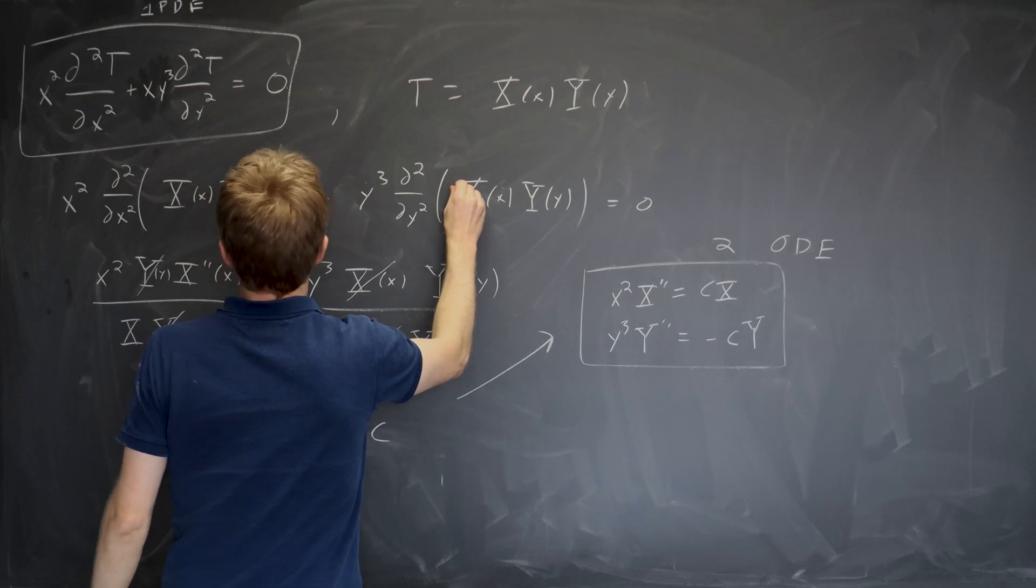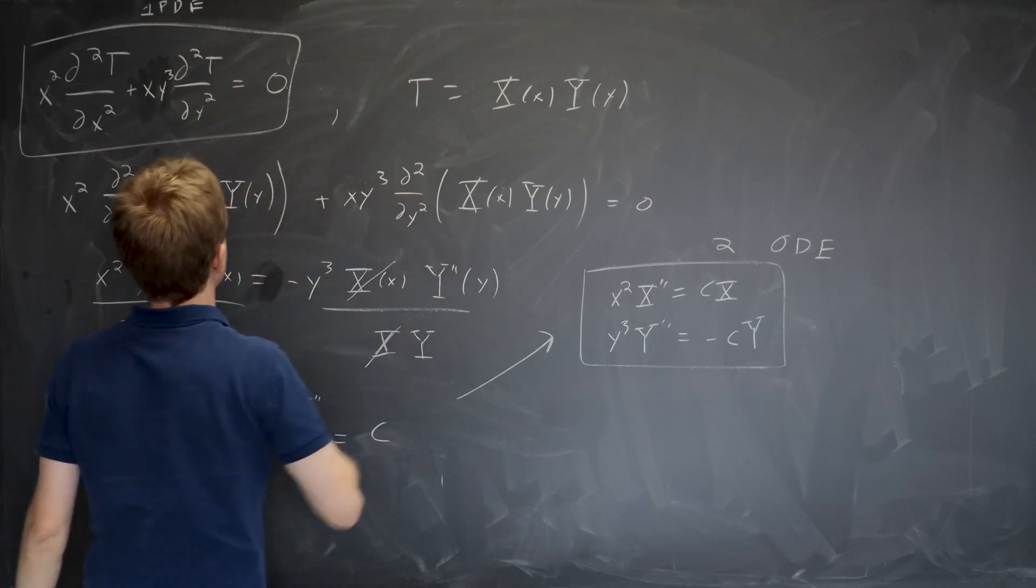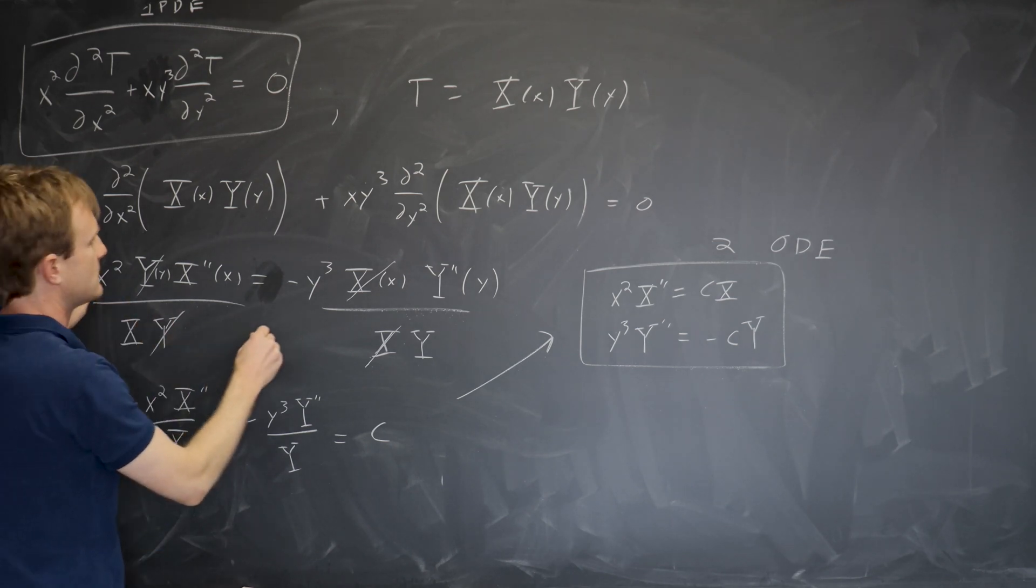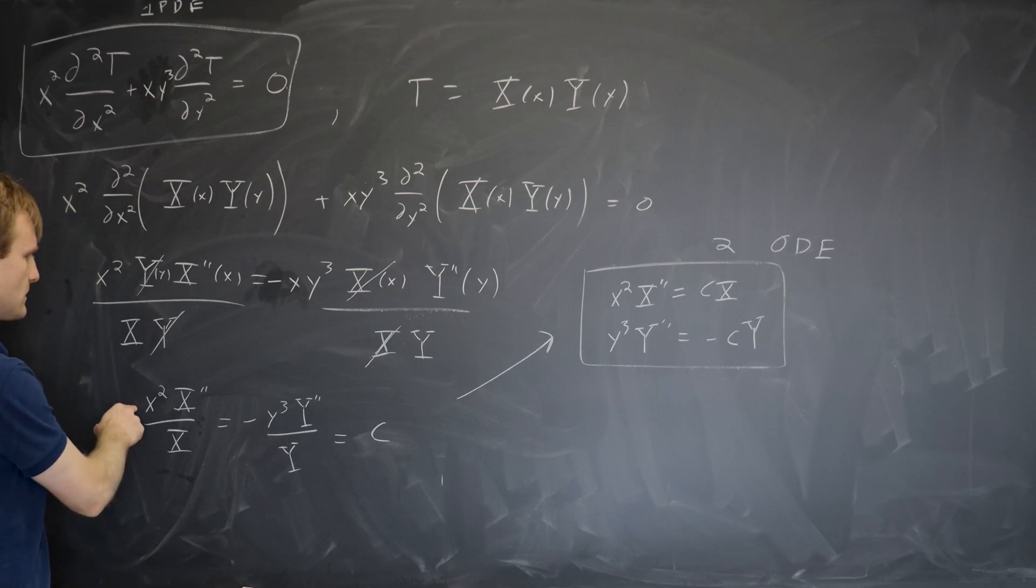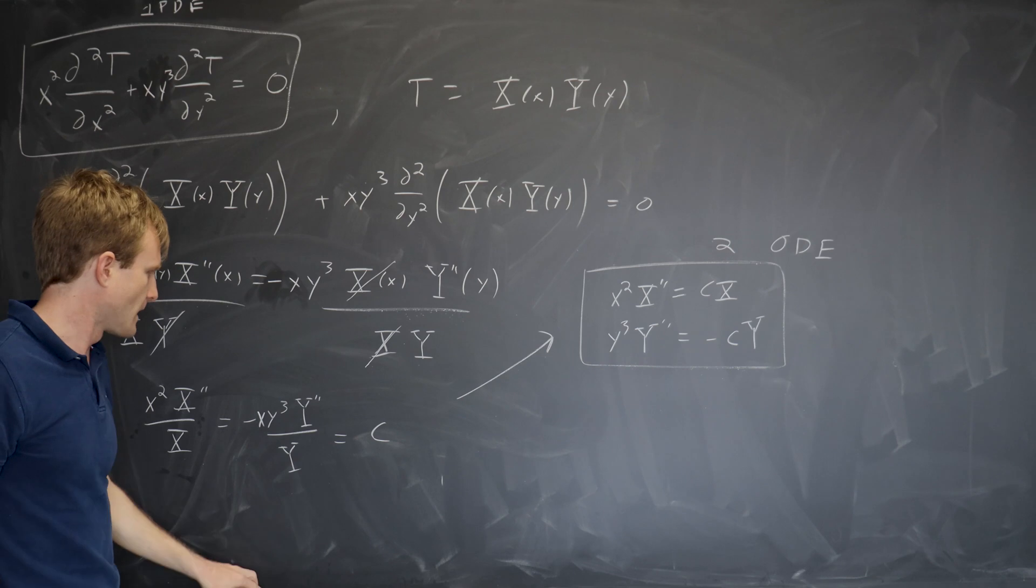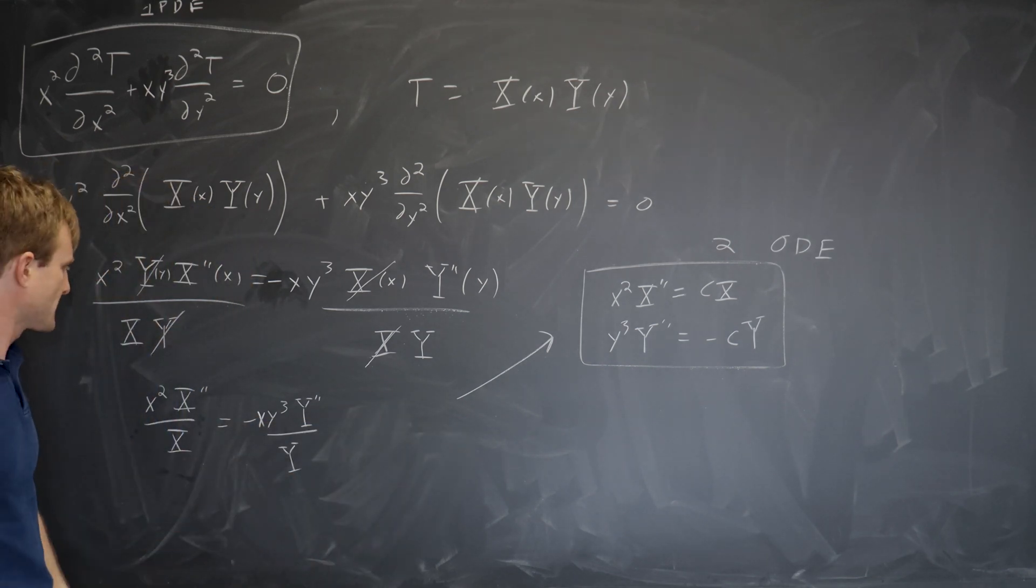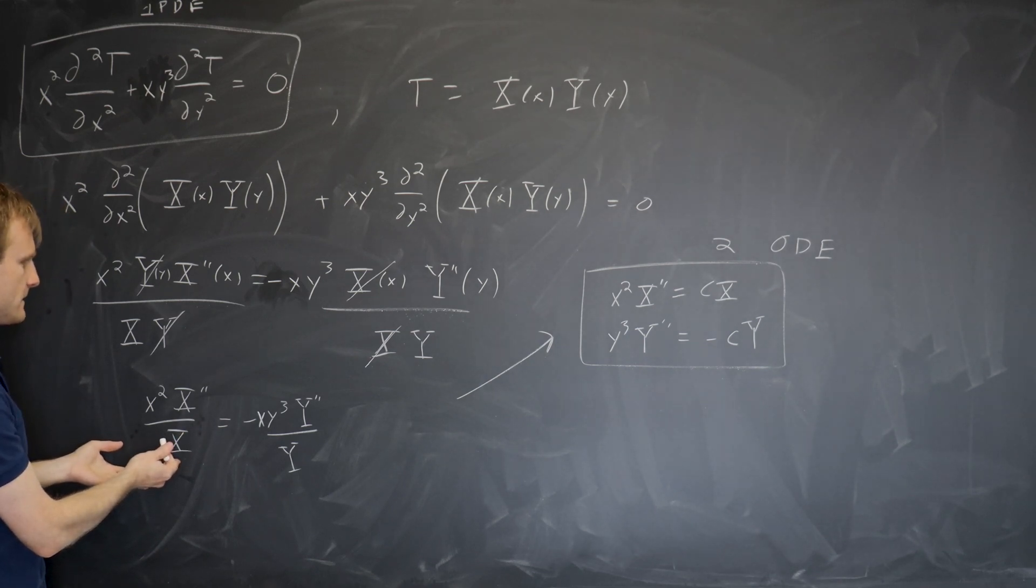This term is unchanged. This term has an x in front of it. Then this term is unchanged. This term has an x in front of it. This term is unchanged. This term has an x in front of it. So let me erase that equals constant. We don't know yet whether it works.